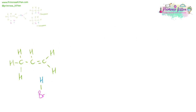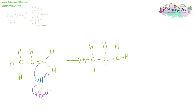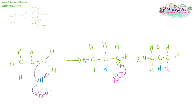Both reaction mechanisms are going to start in exactly the same way. With the electrons from the double bond coming down here, we are going to have a dipole set up, and then the electrons are going to move down towards the bromine. The hydrogen is going to go on there. The bromine is going to be left with a negative charge because it got the electron, and then we are going to have a carbocation. The electrons in the bromine are going to be attracted to the positive charge and move up that way, giving us 1-bromopropane as the minor product.